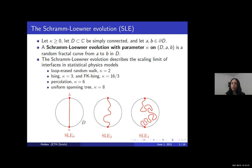We start the talk by giving a brief introduction to SLE. To introduce SLE, we let kappa be a parameter greater than or equal to zero, we let D be a simply connected subset or domain of the complex plane, and we let A and B be distinct boundary points of D. The Schramm-Löwner evolution with parameter kappa on D from A to B is a particular random fractal curve in the domain D connecting the two points A and B.